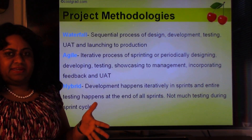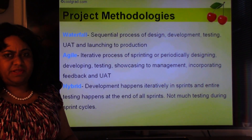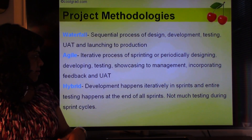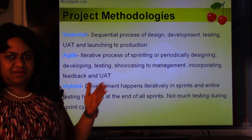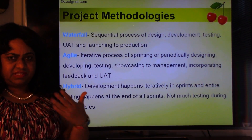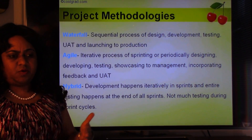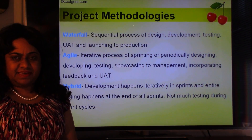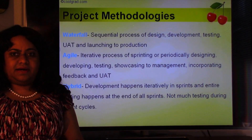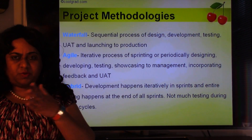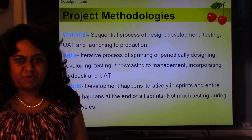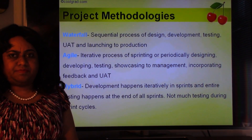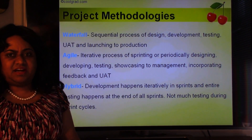UAT in an Agile project happens at the end of all the sprints, before launching to production. In a hybrid project, development happens iteratively in sprints, but there's usually no testing or QA done during the sprint cycles — all the testing is done at the end of all the sprints. So the QA and then the UAT is done at the end of all the sprint cycles. That's like a mixture between waterfall and Agile.